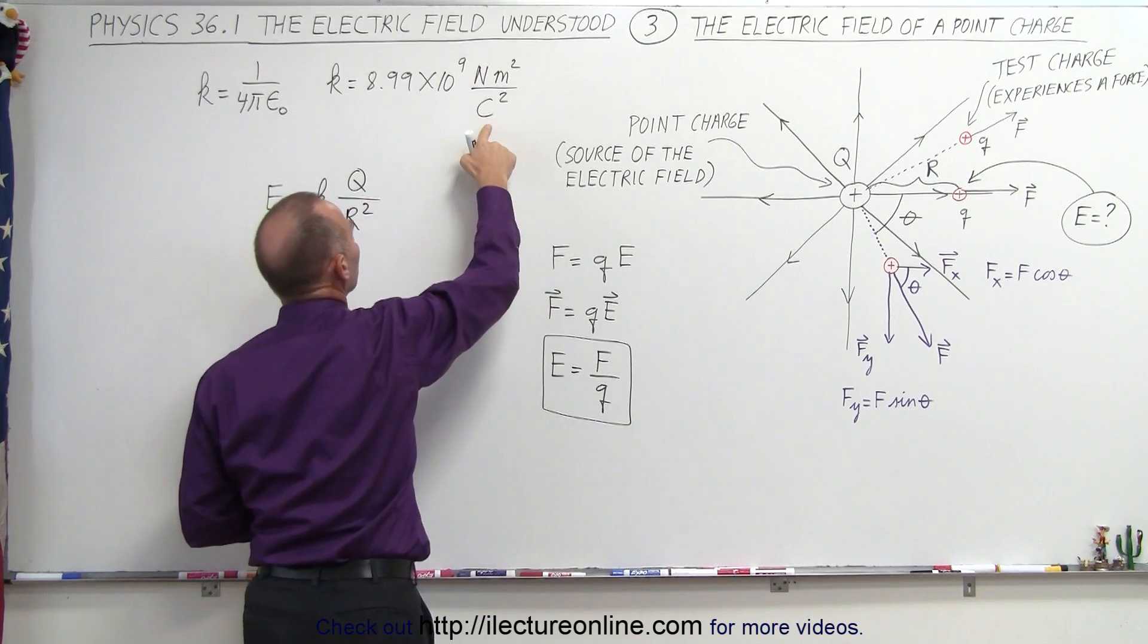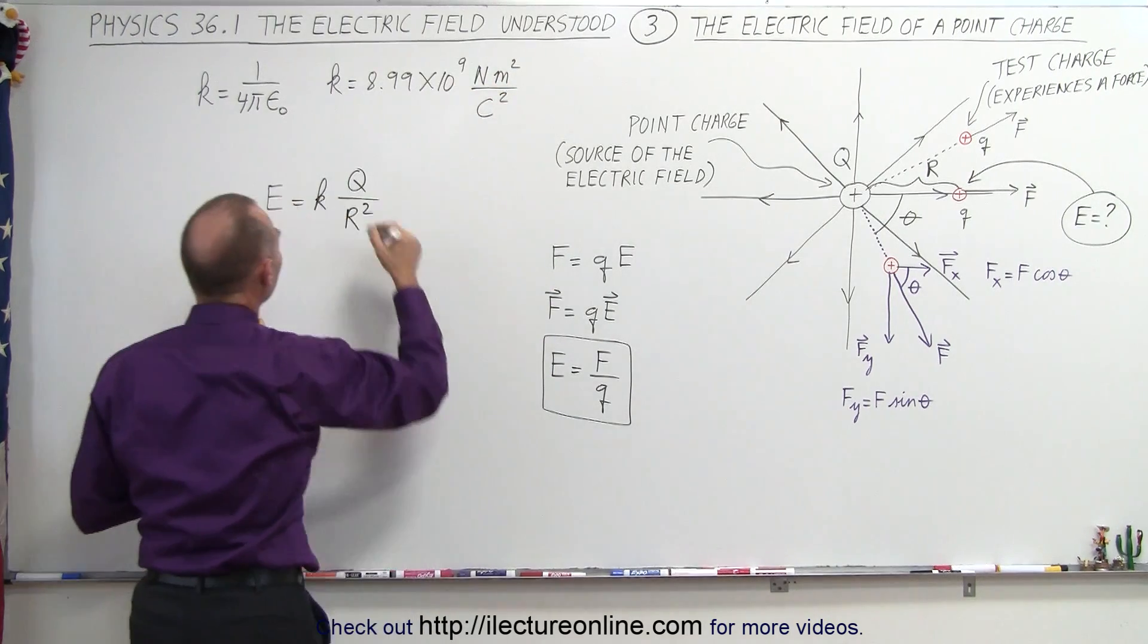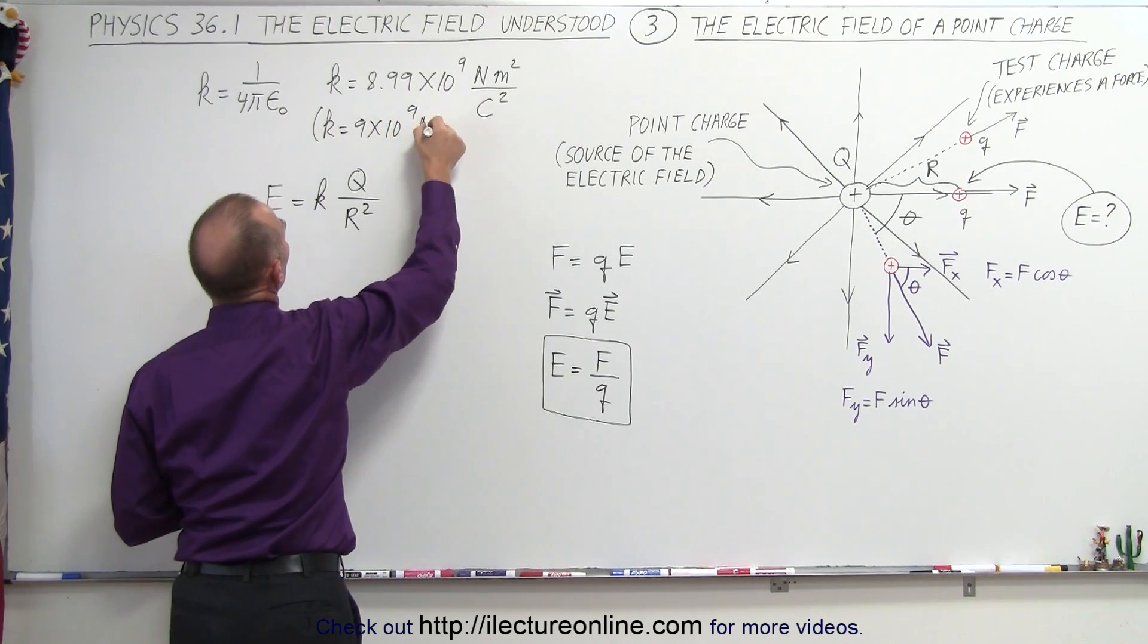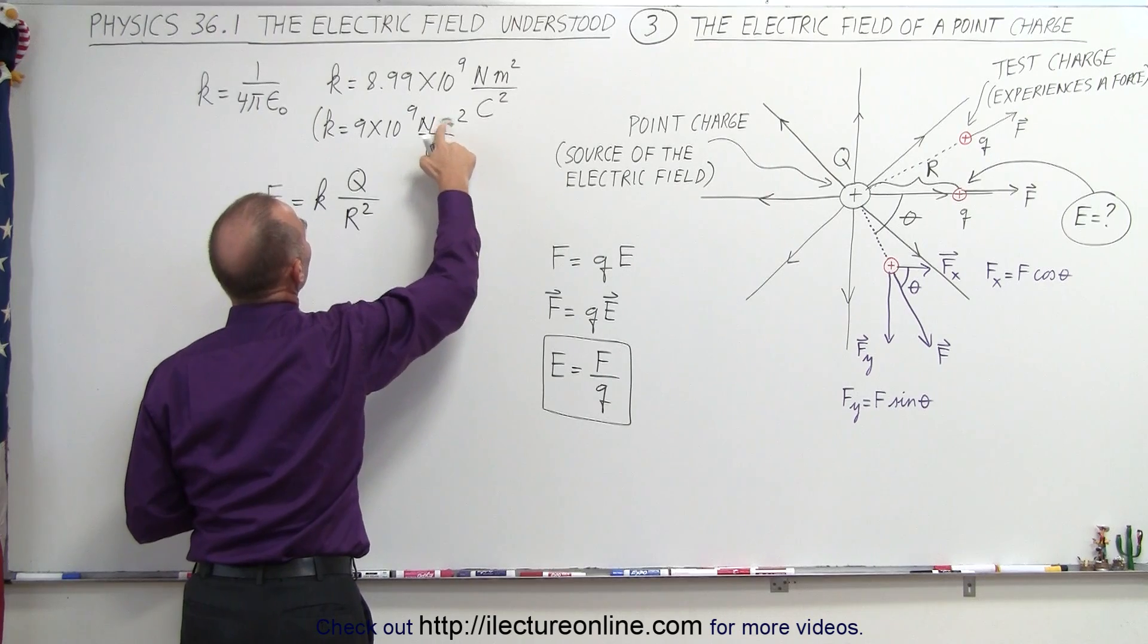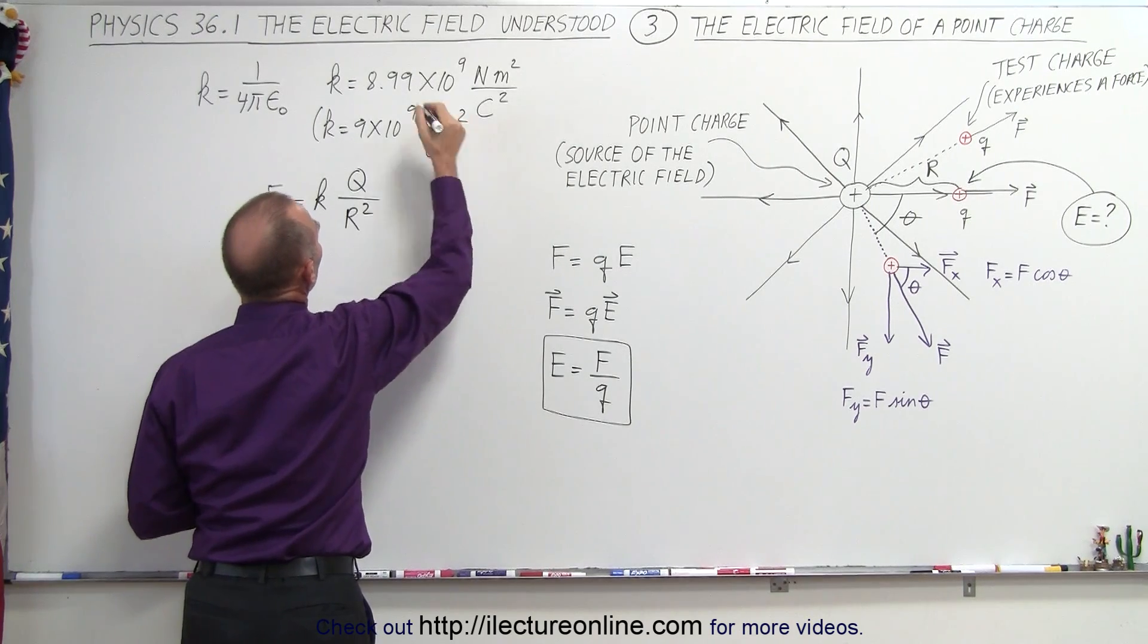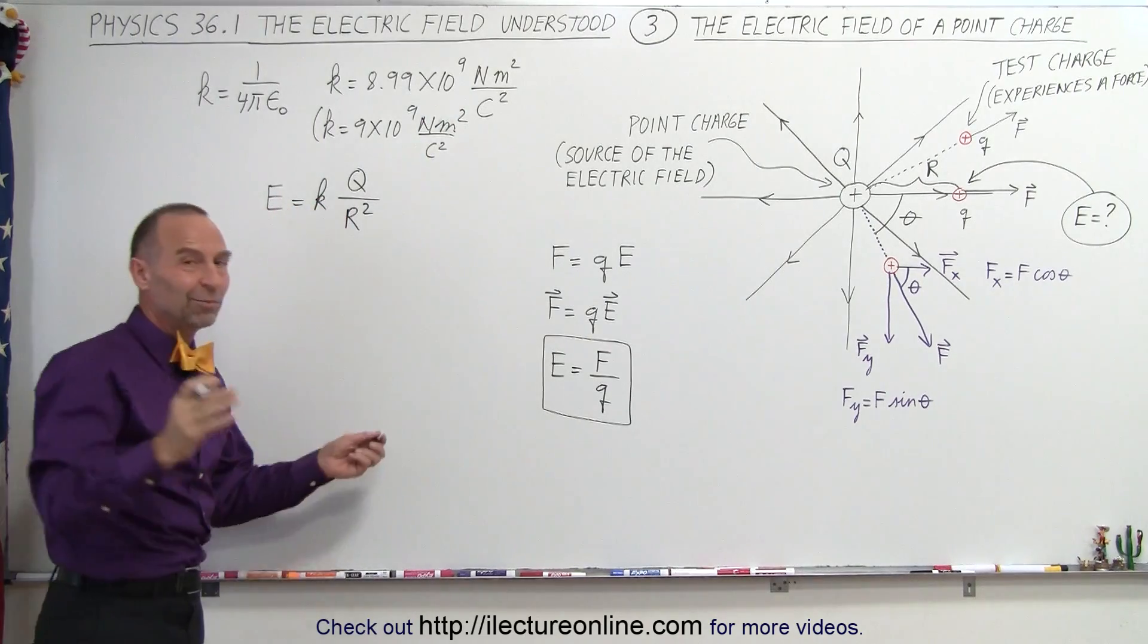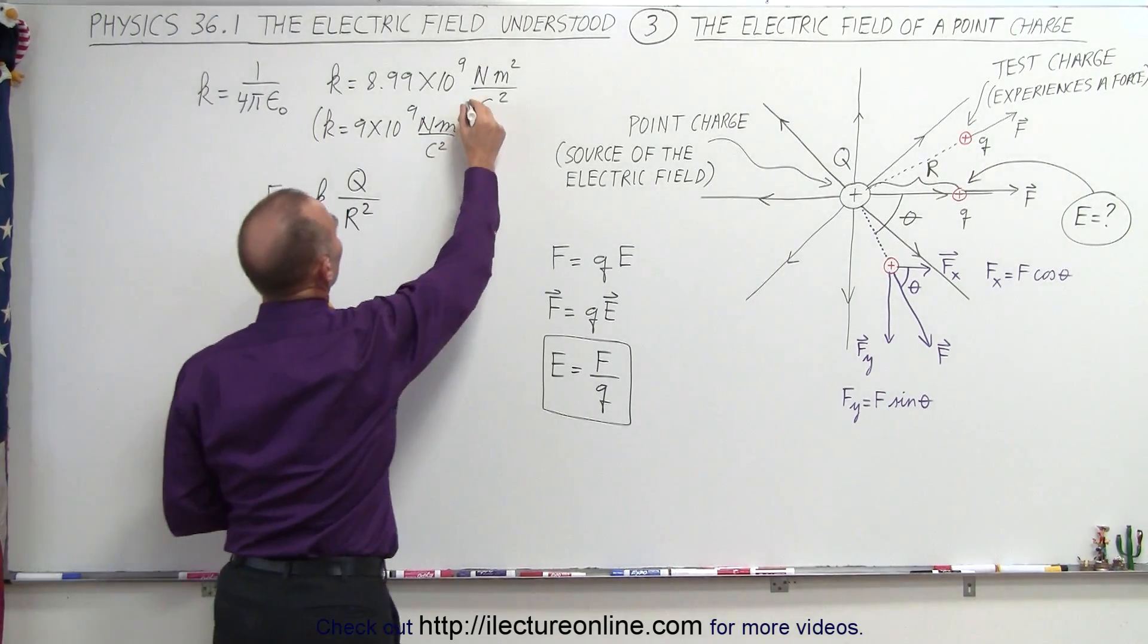Coulomb would be units of charge, m is meters, n is newtons. I like to use k being equal to 9 times 10 to the ninth newtons meters squared per coulomb squared, because it just makes everything a whole lot easier instead of using 8.99. So some people like to use 8.99, I just simply round it off to 9 times 10 to 9. Besides, it's also easier to remember.